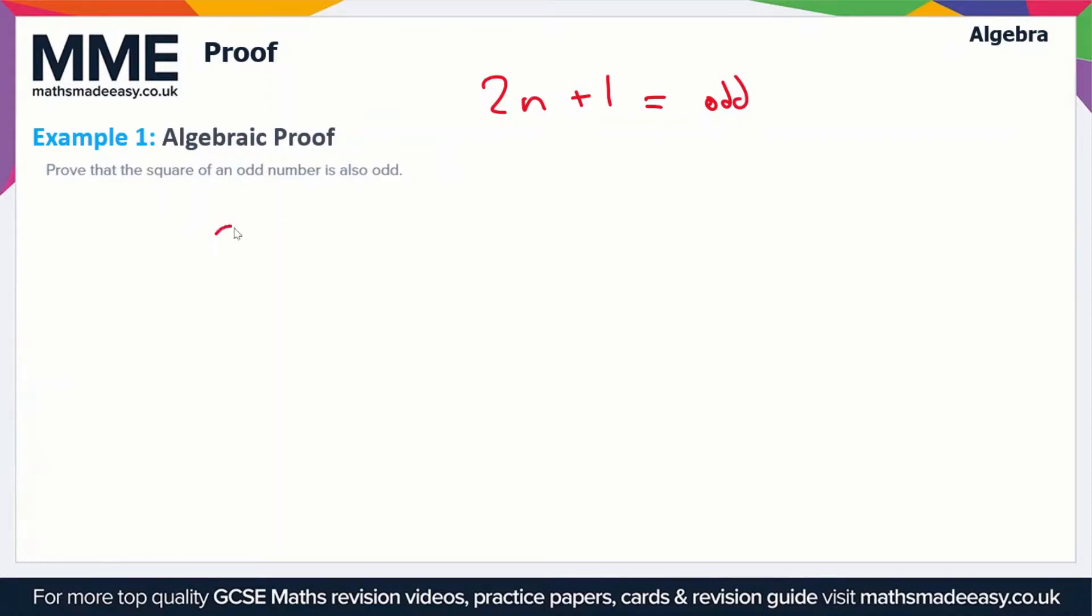This is quite fundamental to algebraic proof. We're going to square this 2n + 1, since we want to find the square of an odd number. So (2n + 1)² we can rewrite as (2n + 1)(2n + 1), a set of double brackets.